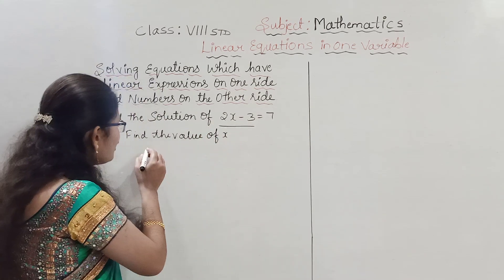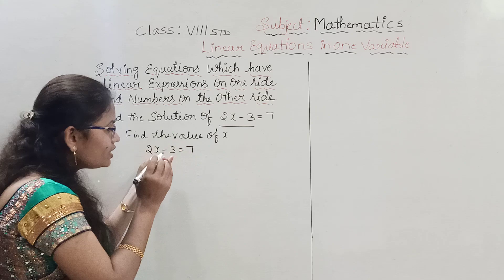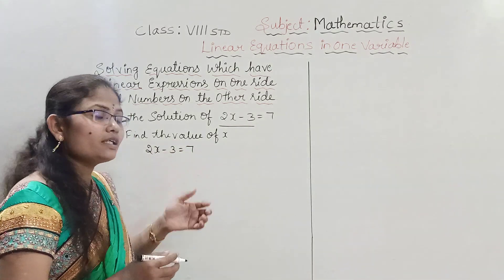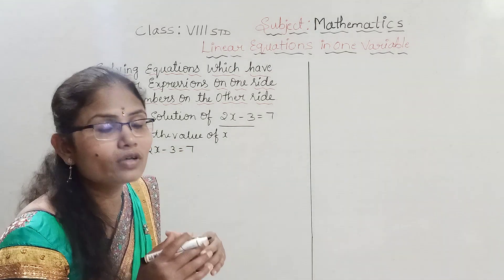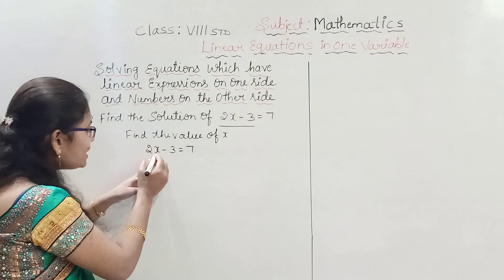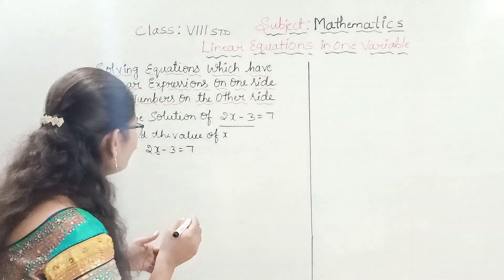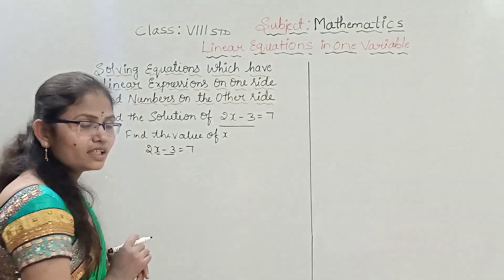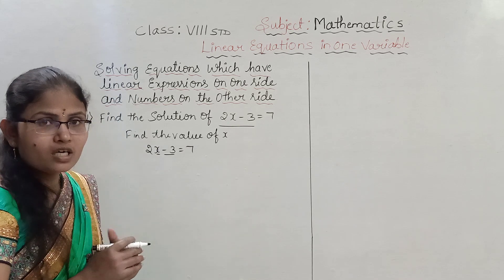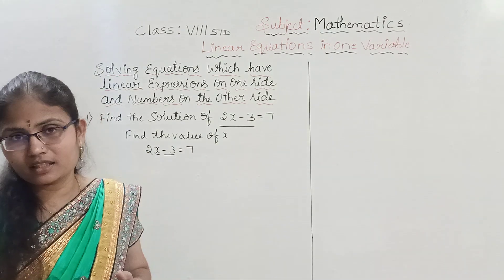They have given 2x minus 3 equals 7. In the LHS side, we have 2x minus 3. We have to find out the value of x. With x, what are the extra terms? It has minus 3 and also 2. We have to eliminate those terms.